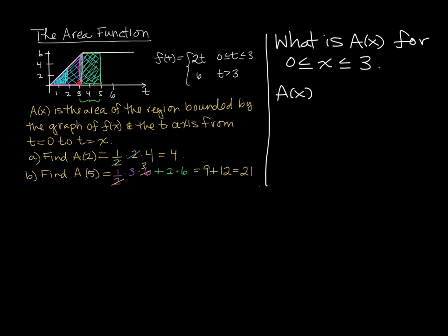Well, that happens to be the piece that corresponds to this triangular area. Regardless of what x is, we can use the formula for the area of a triangle. We'll get 1 half times the base, which is x, times the height. And the height is always given by, if we put x in here, 2x. The 2s reduce, and the area is x squared.